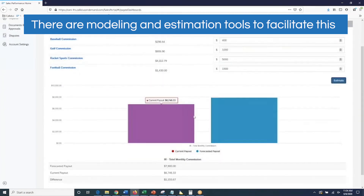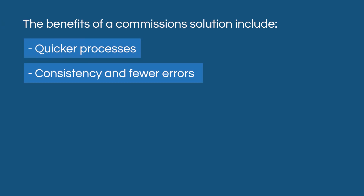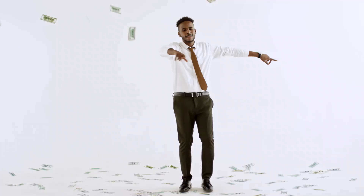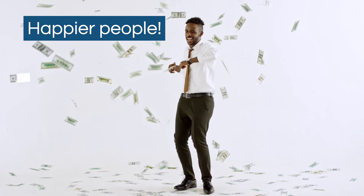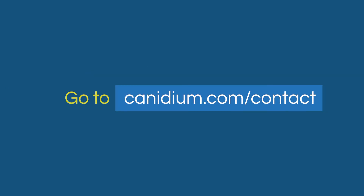To sum it all up, the benefits include quicker processes, consistency and fewer errors, more performance visibility for reps and managers, current data, and of course, happier people. For more information on sales performance management, speak with our team. Just go to www.canidium.com/contact.